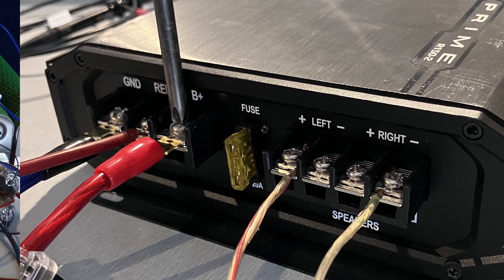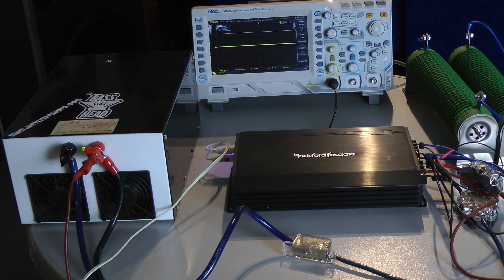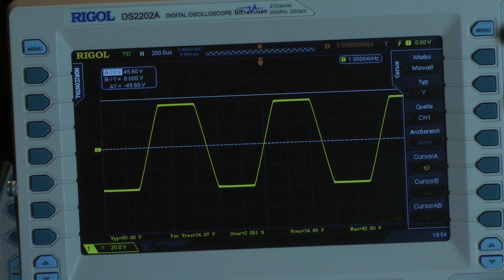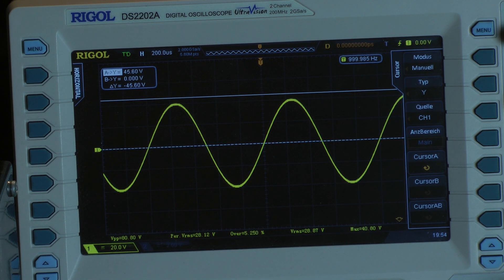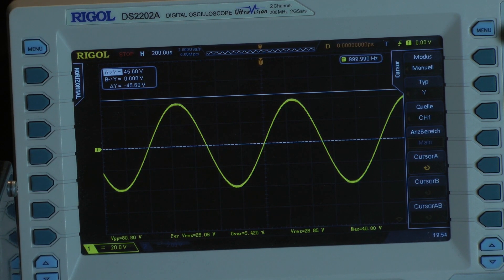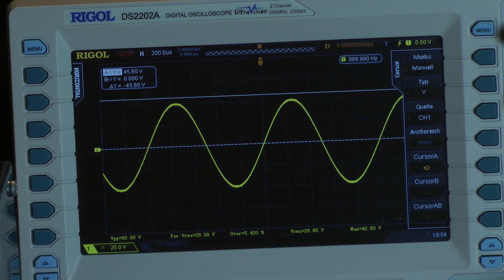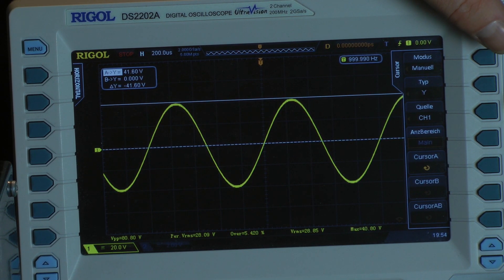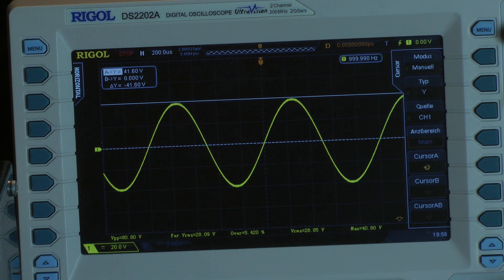Now let's start the dyno. The amplifier is connected to the dummy load. Let's have a look at the scope and see what the amplifier can put out. We have a clean signal. Scope says maximum voltage 40.8, and at the top of the waveform we got 41.6 volts.